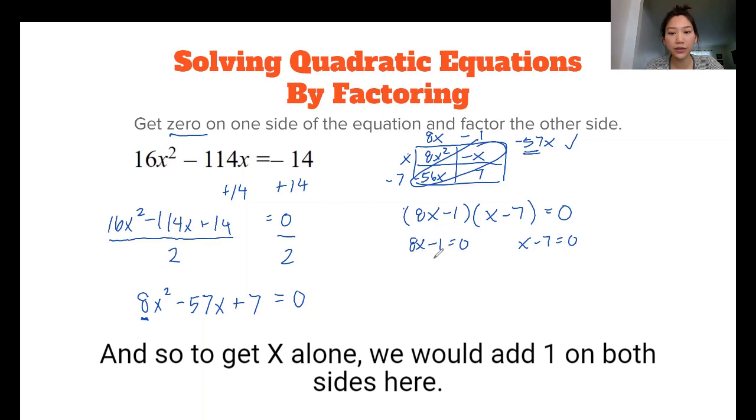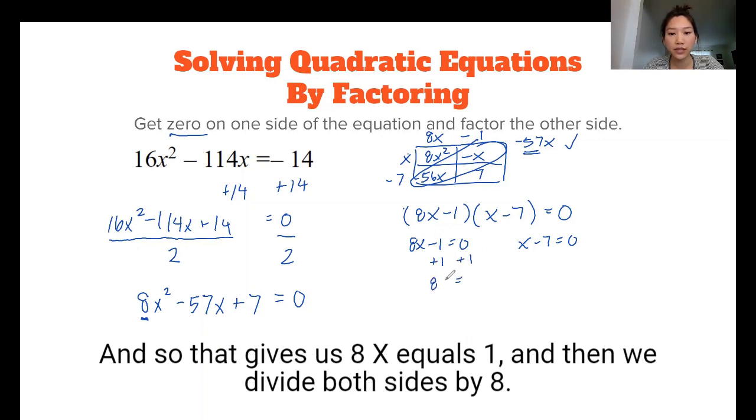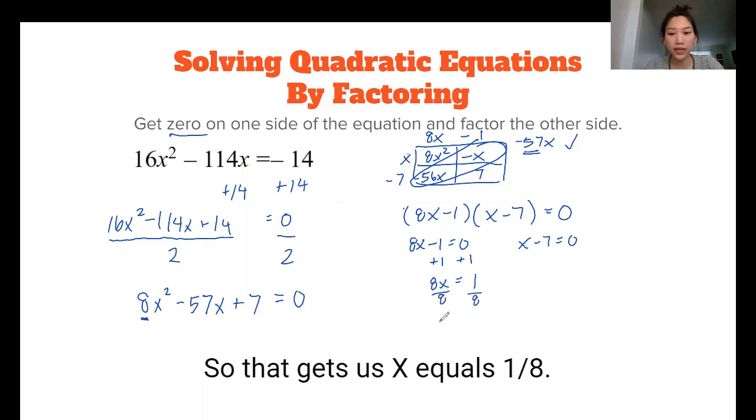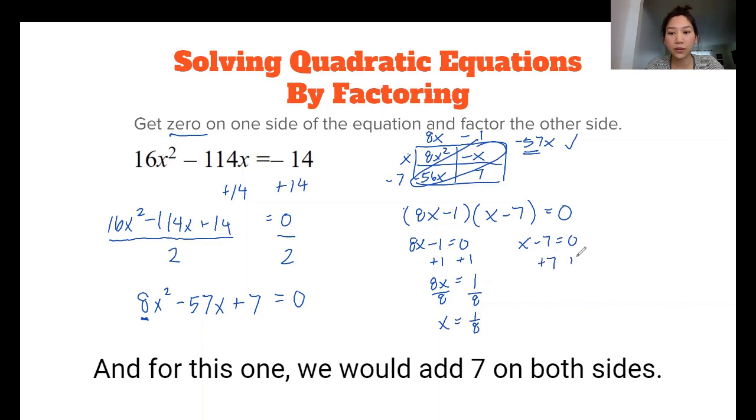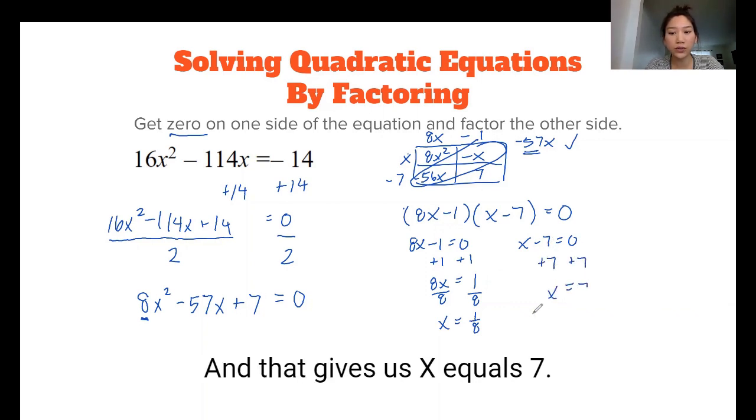And so to get x alone, we would add 1 on both sides here. And so that gives us 8x equals 1. And then we divide both sides by 8. So that gets us x equals 1/8. And for this one, we would add 7 on both sides. And that gets us x equals 7.